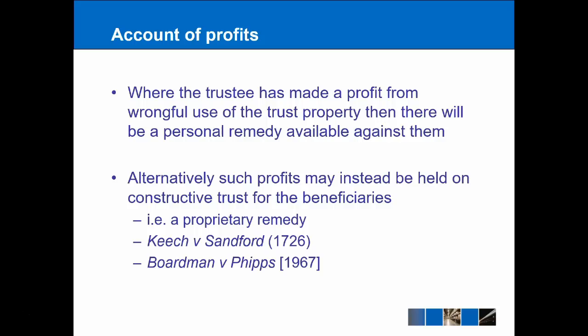The trustee may also be accountable for profits they've made. The general rule is that trustees are not allowed to make a profit from being a trustee. If there is wrongful use of trust property there may be a personal remedy against them, but more likely the profits themselves are held on a constructive trust for the beneficiaries. Because the trustee made the profit because of the trust, the profits are considered as belonging to the trust, and the courts use this constructive trust to bring the profits back to the trust fund. This is a proprietary remedy, originating from Keech v Sanford 1726, with the more modern approach coming from Boardman v Phipps 1967.